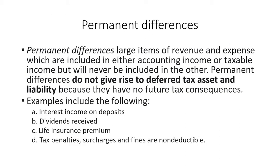Permanent differences, from the word itself, are items that may be available in one type of income but will never be included in the computation of the other. For example, something may be income based on accounting standards, but for tax purposes it is not income — it is not taxable.